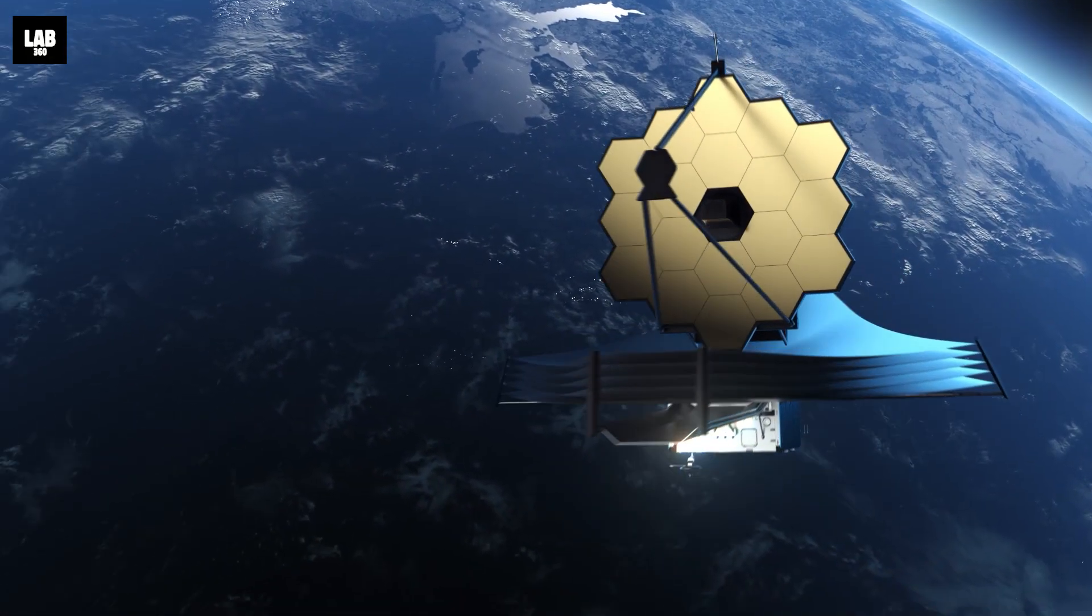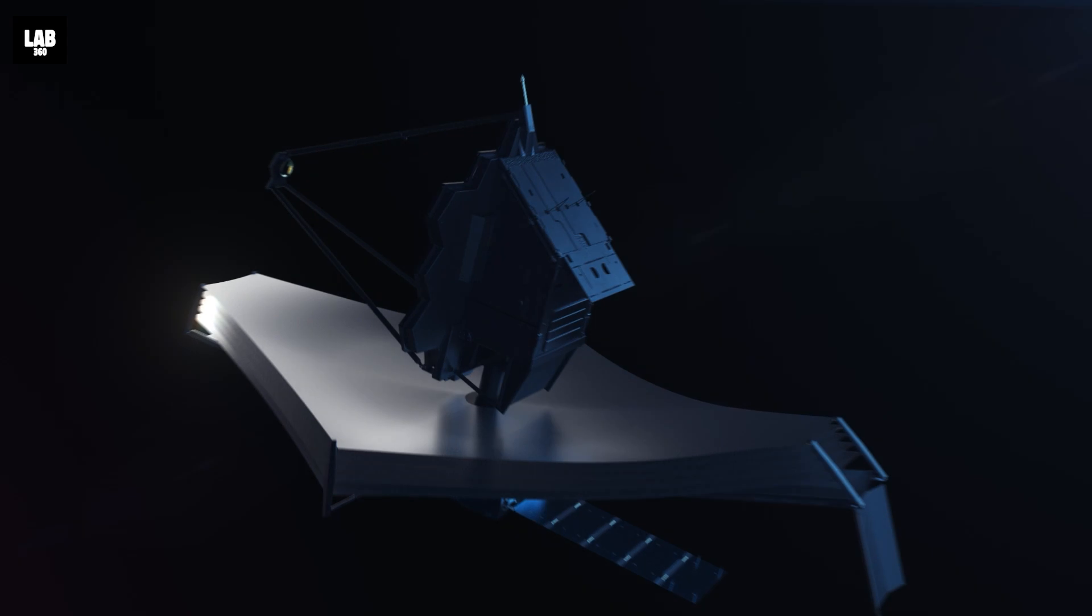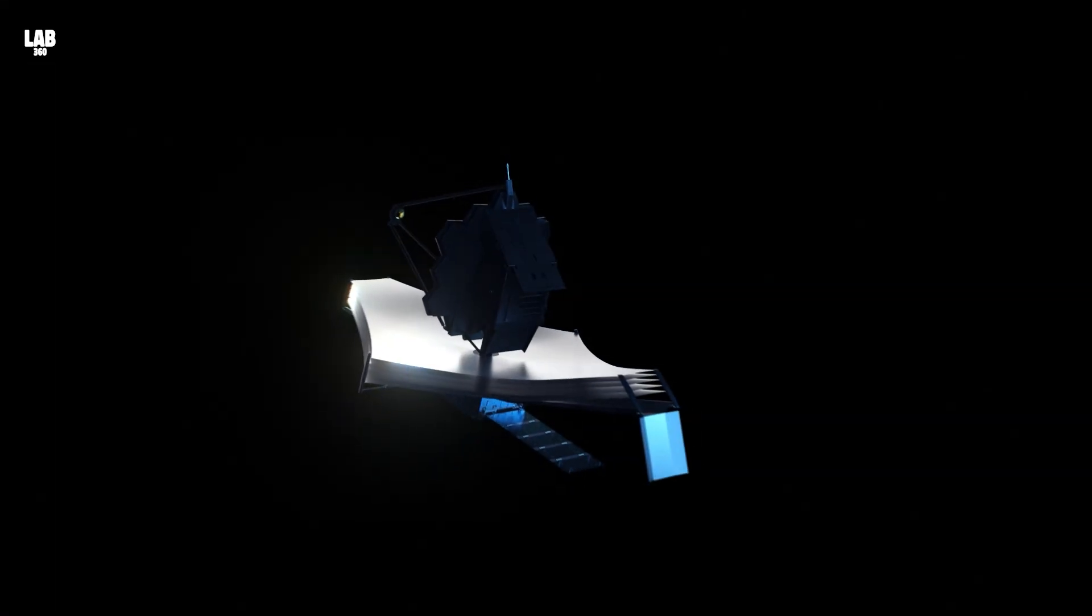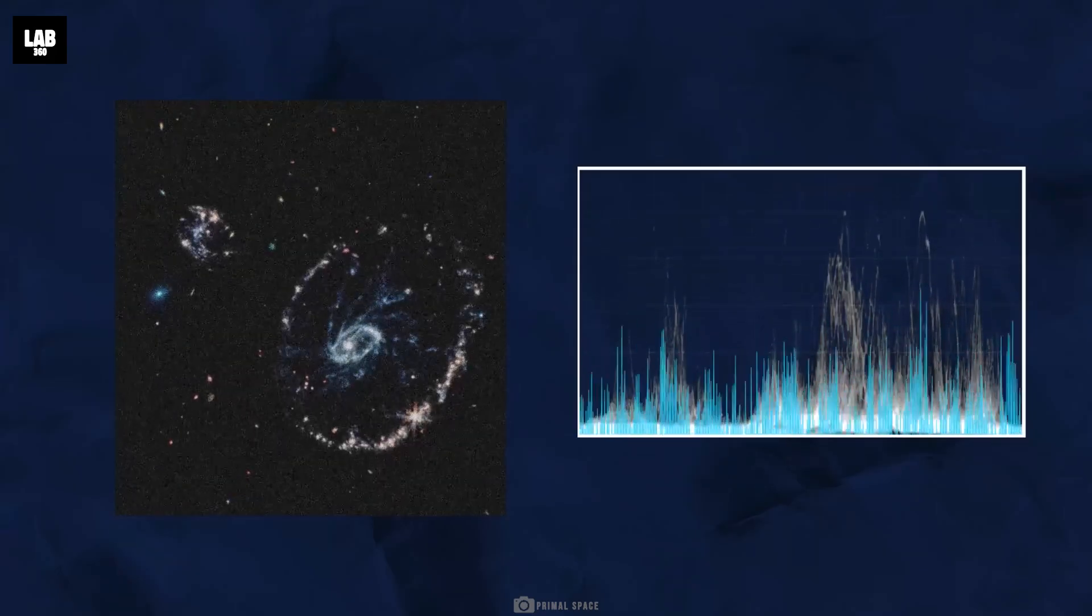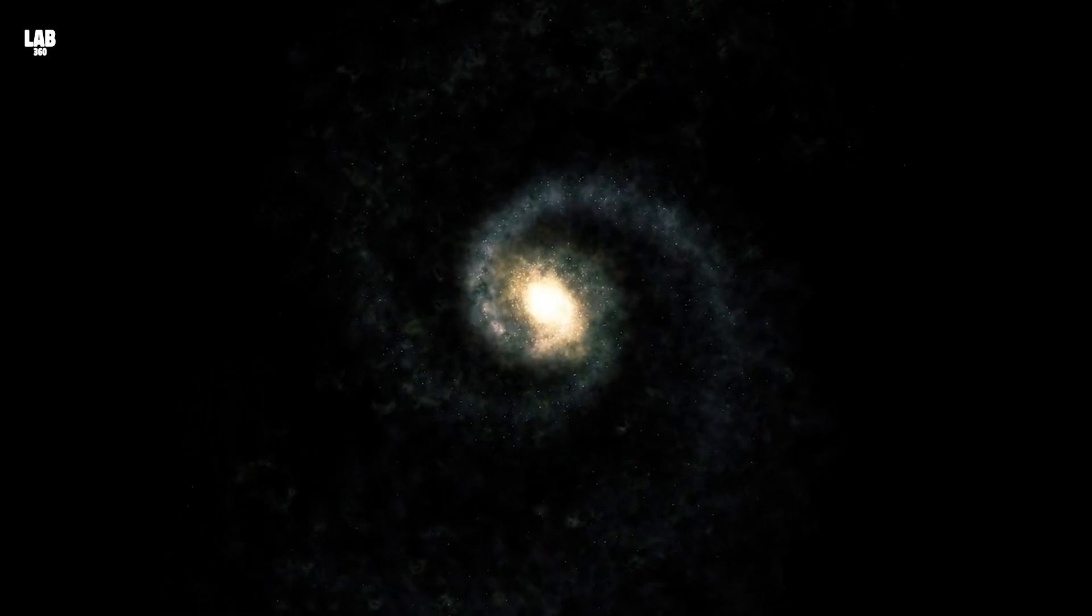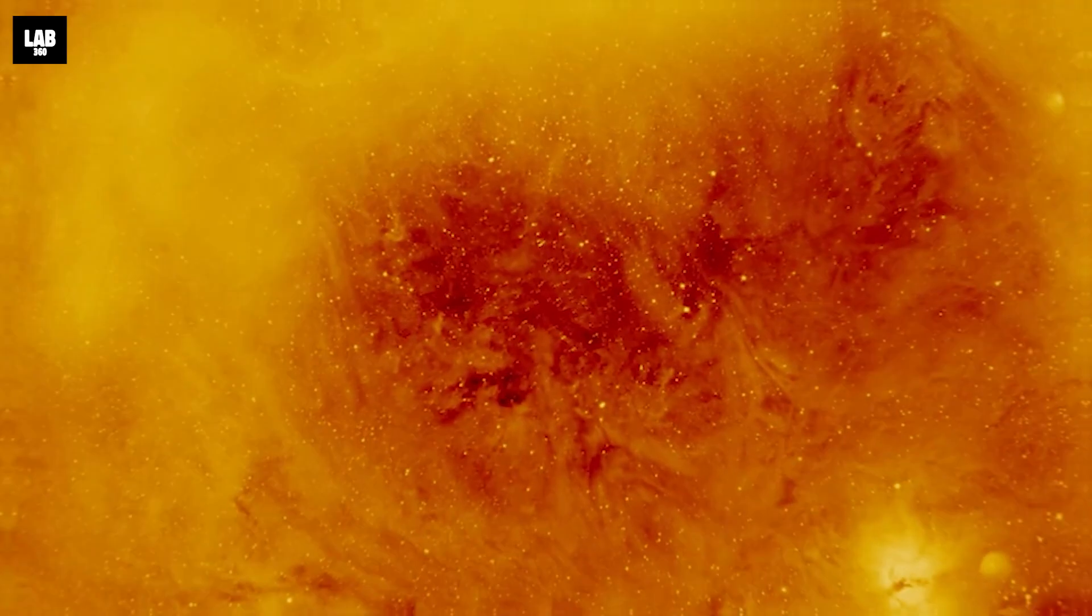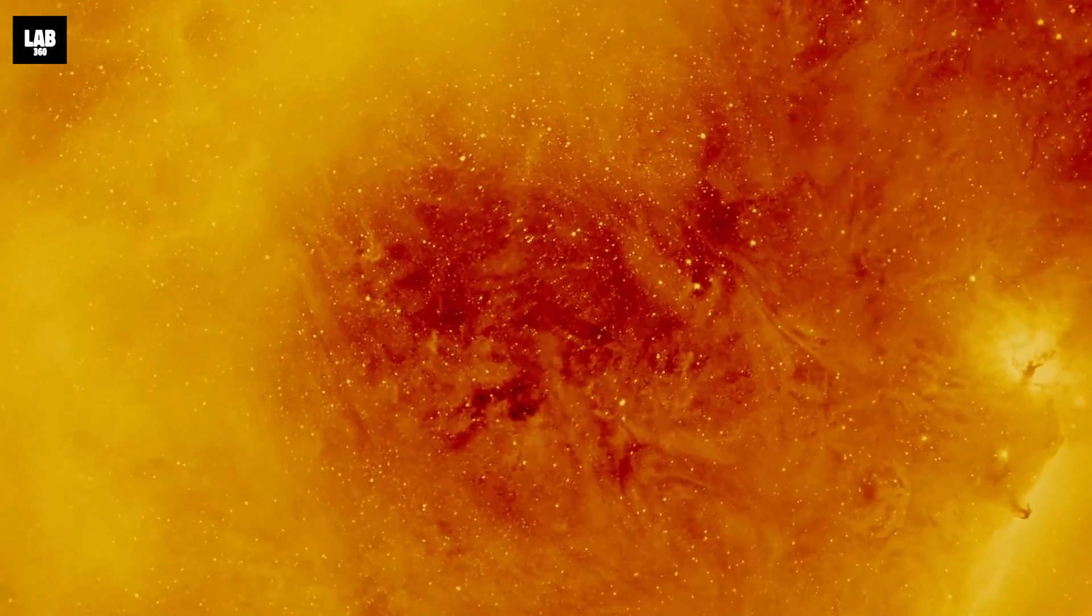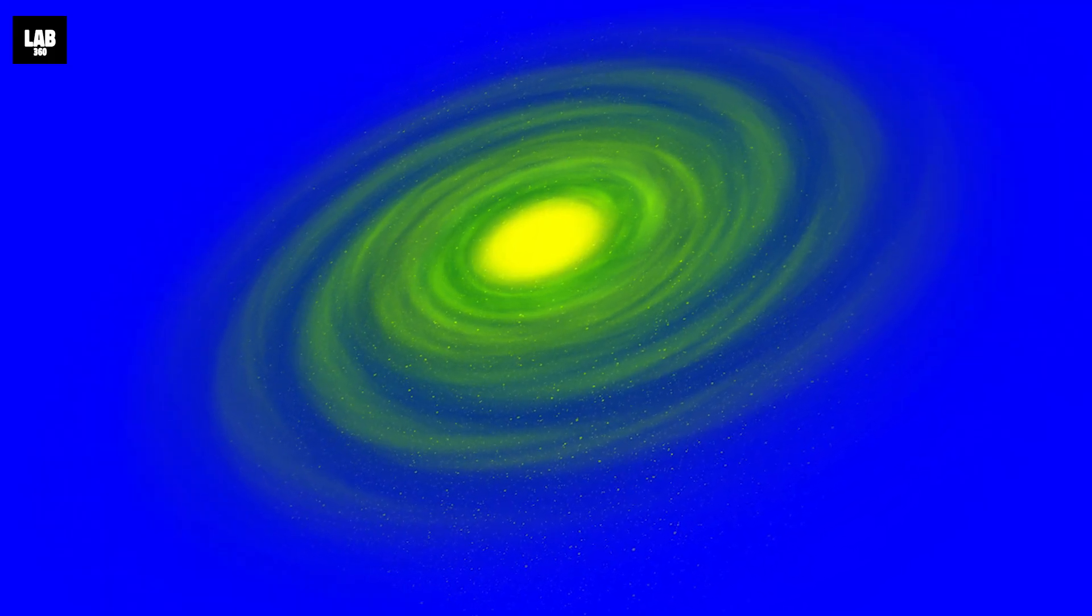And while we are at it, let us also look at what the Webb telescope is capturing, that is unfolding the universe like never before. It has discovered six galaxies that existed only 500 million years after the Big Bang. Not just that. These galaxies are well formed and contains more stars than today's galaxies like our Milky Way.